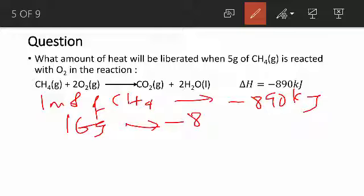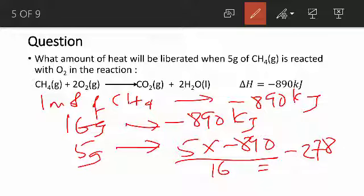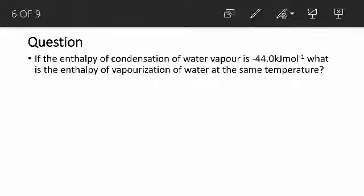So now we want to know how many kilojoules of heat will be liberated if we use 5 grams of CH4. By cross multiplication, we are going to get 5 times minus 890 divided by 16, and that gives us minus 278.125 kilojoules. Good. We see a question here.